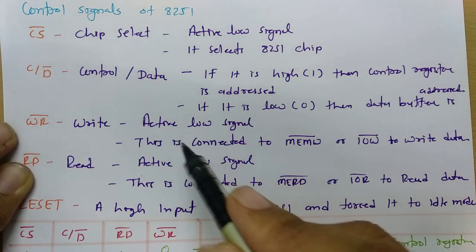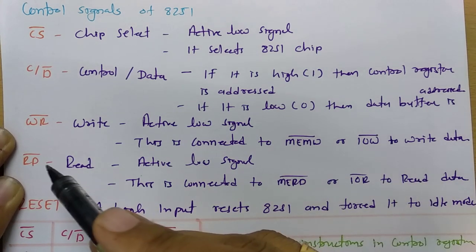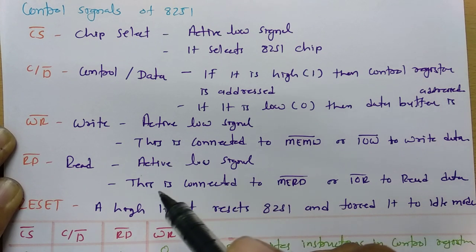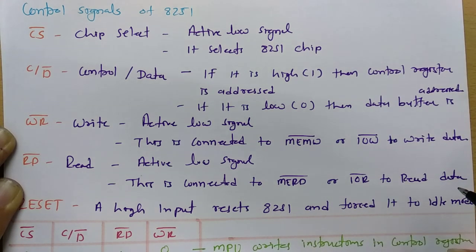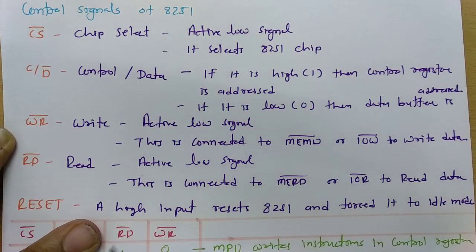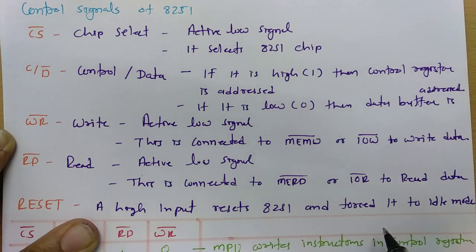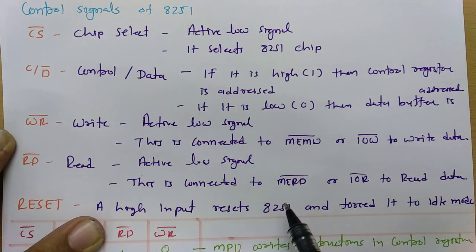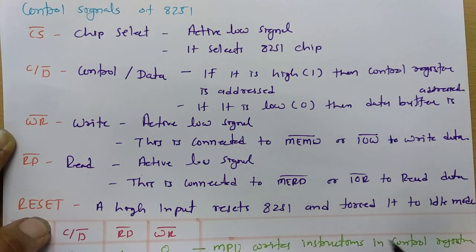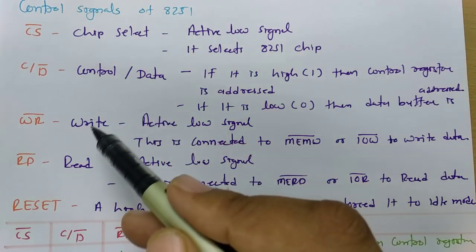The Write bar signal is an active low signal that can be connected to memory write or I/O write. The Read bar is also an active low signal that can be connected to memory read or I/O read operations. One more control signal is Reset — it is active high in 8251, and it will force 8251 to go into idle mode.